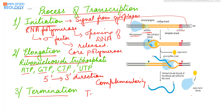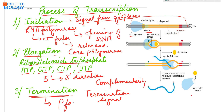When the termination signal is reached, termination occurs with the help of a protein factor called the rho factor, which recognizes the termination signal. Transcription comes to an end and the nascent RNA molecule is released.